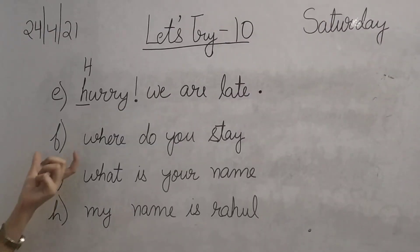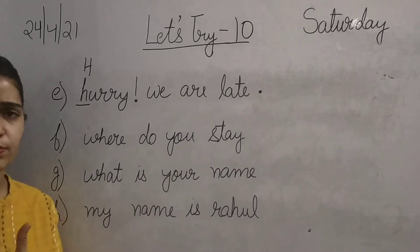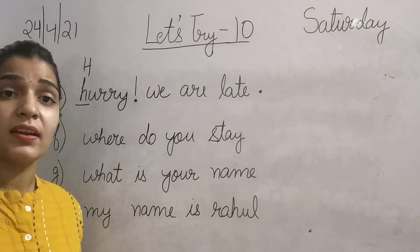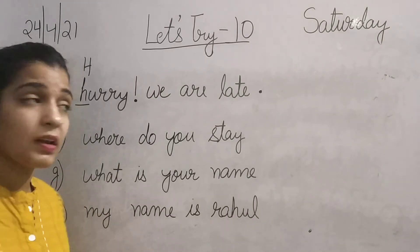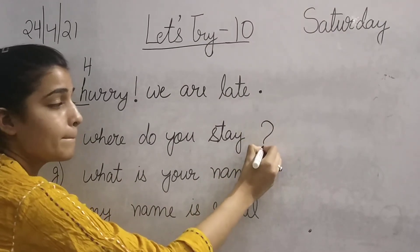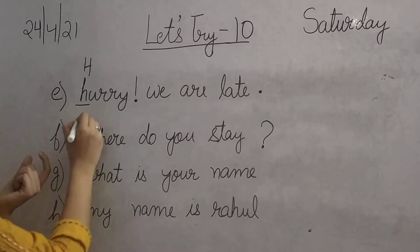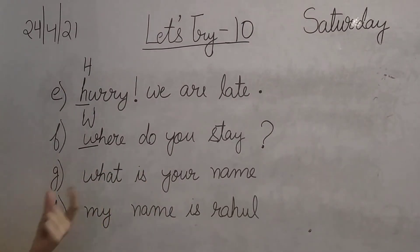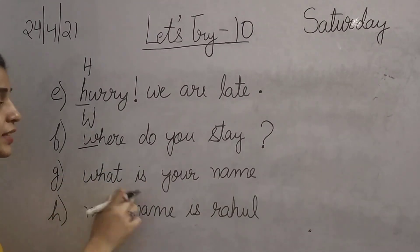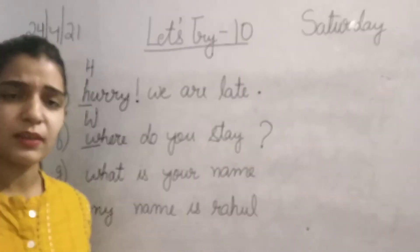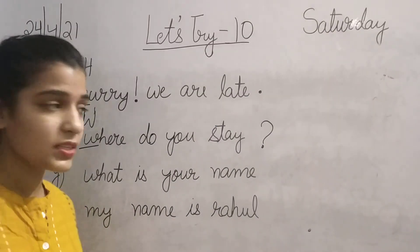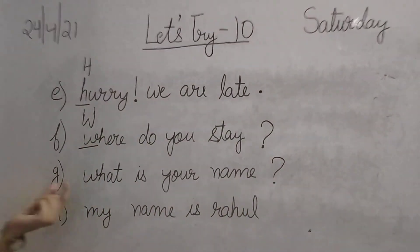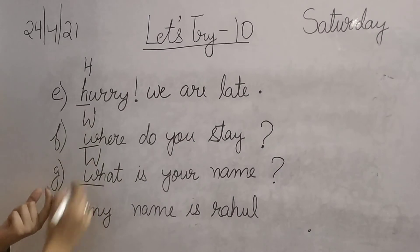The next sentence is: 'Where do you stay?' Someone is asking the question. When someone asks a question, we will put a question mark at the end. And W should be capital. After that: 'What is your name?' — someone is asking the question, so we will put the question mark at the end and W should be capital.